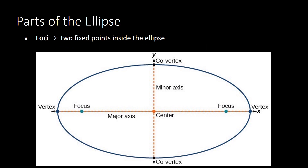Next we have foci, which is the plural form of focus. The foci are two fixed points inside the ellipse. Once you have located the major axis and the vertices along it, you can also locate the foci, because the foci are always located innermost relative to the vertices. So if this is your vertex, the focus will be inside here, and we have another focus on the other side.